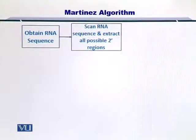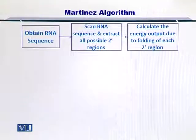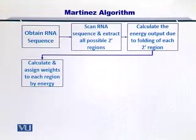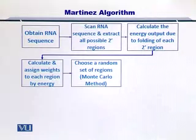To begin with, we can take the RNA sequence and extract all the possible secondary sub-regions. Once we have done that, we can try to see how much energy is given out as a result of the formation of each region. Once you have calculated the energy given out by each sub-region within the RNA sequence's secondary structure, you can calculate weights and assign them to each region, which are directly proportional to the energy given out due to the formation of that region.